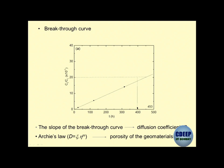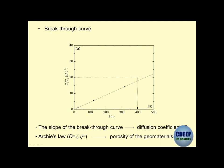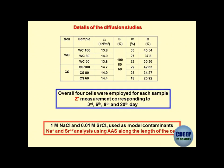If you use Archie's law and know the value of D, you can obtain the porosity by conducting different experiments on different types of geomaterial-contaminant systems. We use the word 'system' - we have a geomaterial and a contaminant, and how these two are going to interact is the system we want to analyze. Further interpretation of this information gives us some useful relationships.